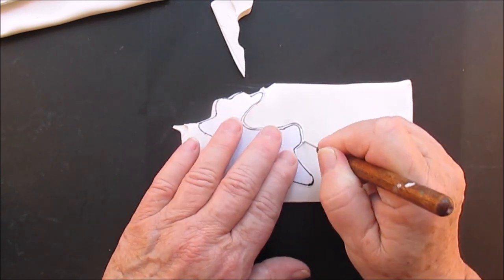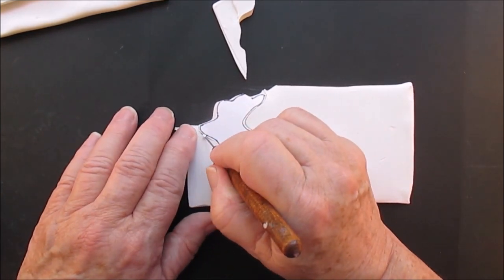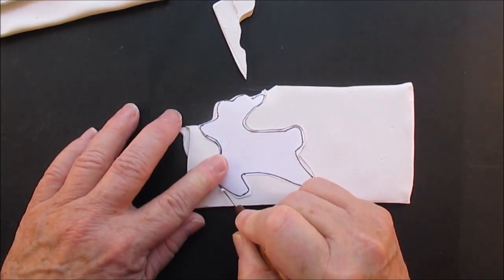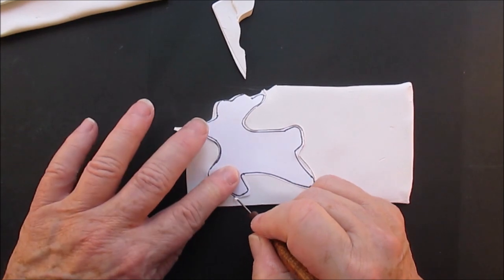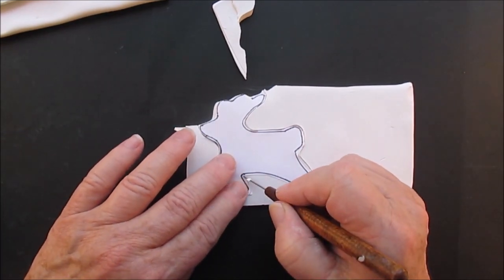In case you don't have cookie cutters, you can print out forms from the internet or from a book or whatever and make your own shapes, and of course you can cut it out with the exacto knife.